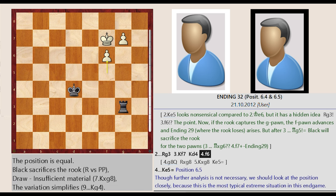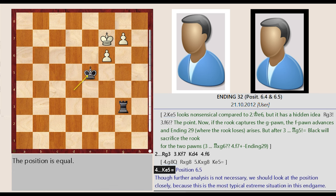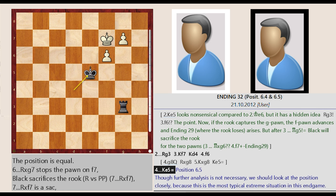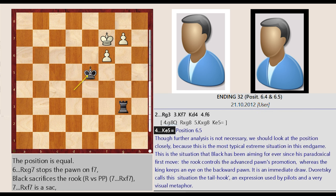F5 f6, King d4 e5. Position 6.5. Though further analysis is not necessary, we should look at the position closely, because this is the most typical extreme situation in this endgame. This is the situation that black has been aiming for ever since his paradoxical first move. The rook controls the advanced pawn's promotion, whereas the king keeps an eye on the backward pawn. It is an immediate draw. Dvoritsky calls this situation the tail hook, an expression used by pilots in a very visual metaphor.